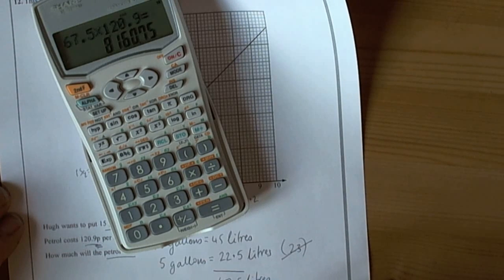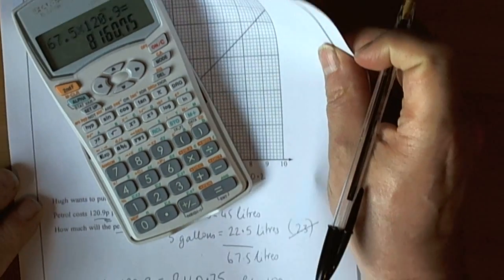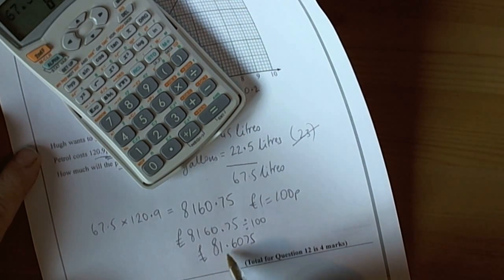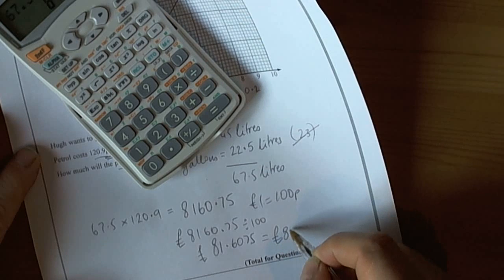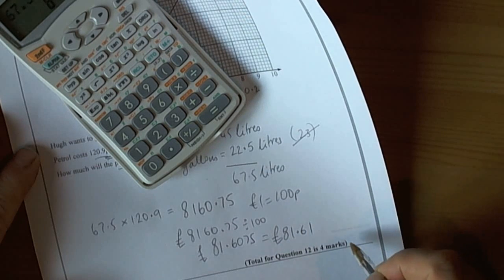So we are going to end up with £81.6075, but we realise that money, you can't write it as £81.6 because that doesn't exist, so it is going to be £81.61 rounded to a sensible degree of accuracy for money, and that will be our final answer.